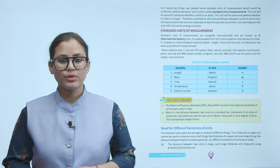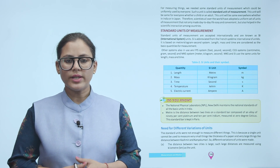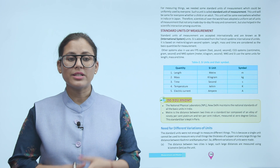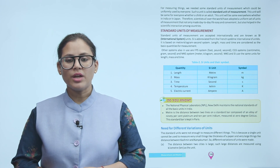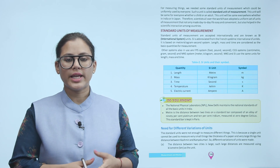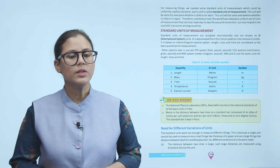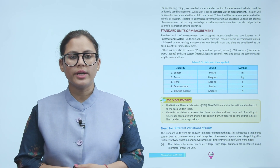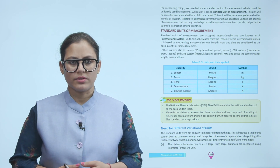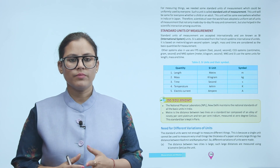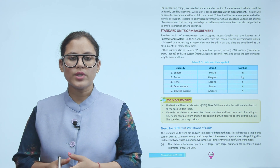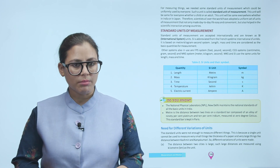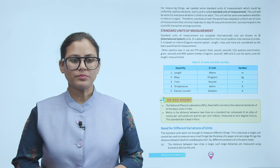For measuring things, we need some standard units of measurement which could be uniformly used by everyone. Such a unit is called a standard unit of measurement. This unit will be the same for everyone, whether a child or an adult, and the same everywhere, whether in India or in Japan. Therefore, scientists all over the world have adopted a uniform set of units of measurement that not only made day-to-day life easy and convenient but also helped in scientific interaction among countries.